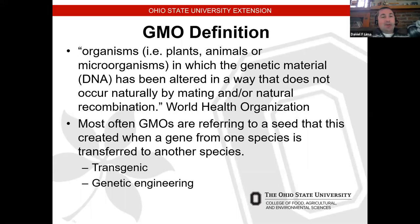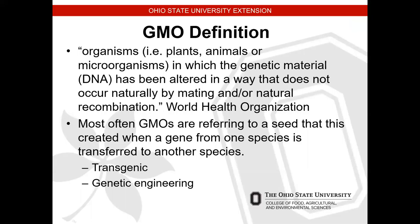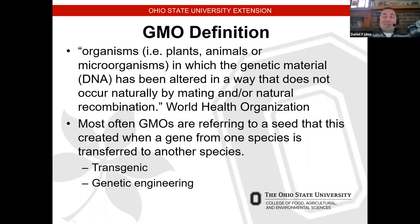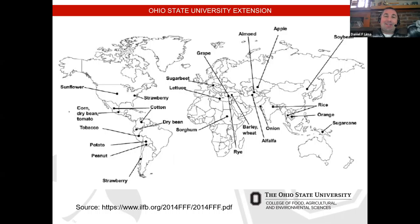The definition of GMOs from the World Health Organization: plants, animals, or microorganisms in which genetic material — DNA — has been altered in a way that does not occur naturally by mating or natural recombination. Most GMOs refer to a seed created with a gene from one species transferred into another. Other terms used include 'transgenic' and 'genetic engineering.'